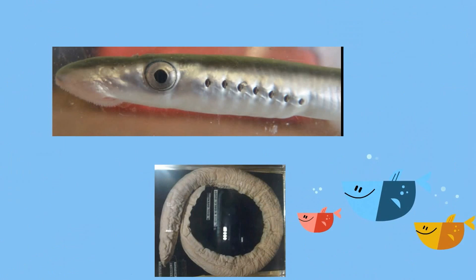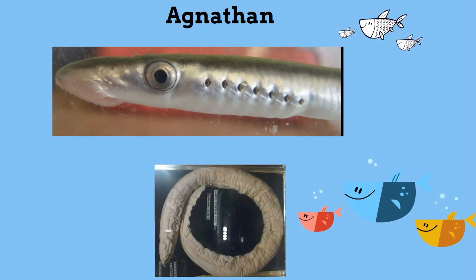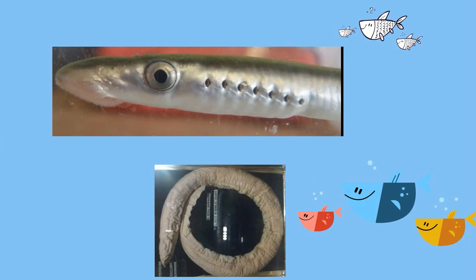Jawless fish are in the group called agnathans. They lack paired fins, an internal skeleton system, and they have a strange circular mouth. Common examples include the hagfish and the lamprey.